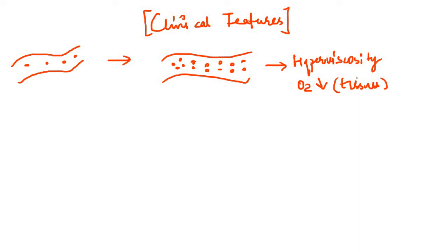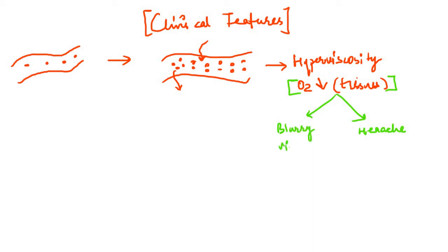When blood goes into the lungs, oxygen diffuses from the alveoli into the blood vessels and then into the tissues. In polycythemia vera, the blood vessel is so full of densely packed RBCs that oxygen cannot diffuse through effectively. As a result of decreased oxygen supply to the tissues, there will occur headache due to decreased oxygen supply to the central nervous system, and blurred vision due to decreased oxygen supply to the sensitive retina.